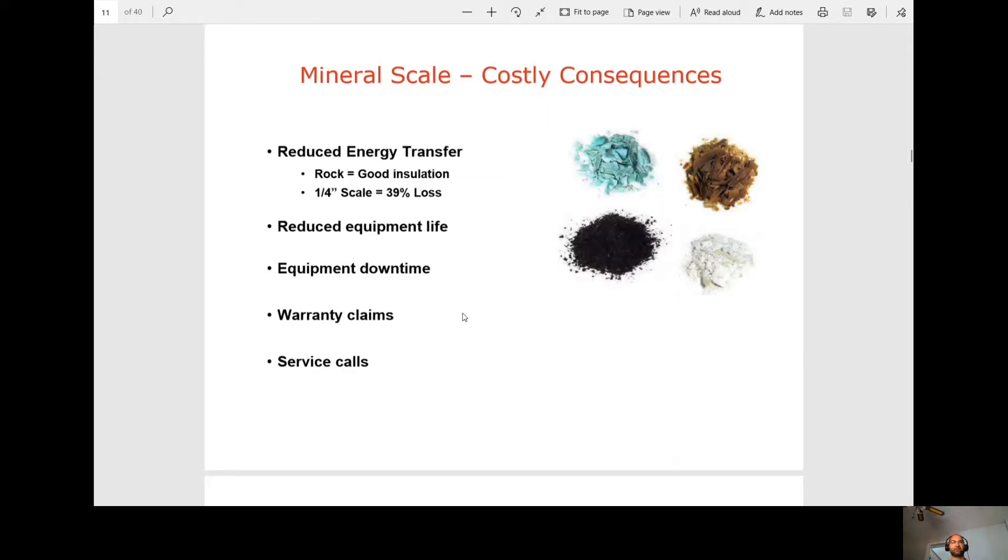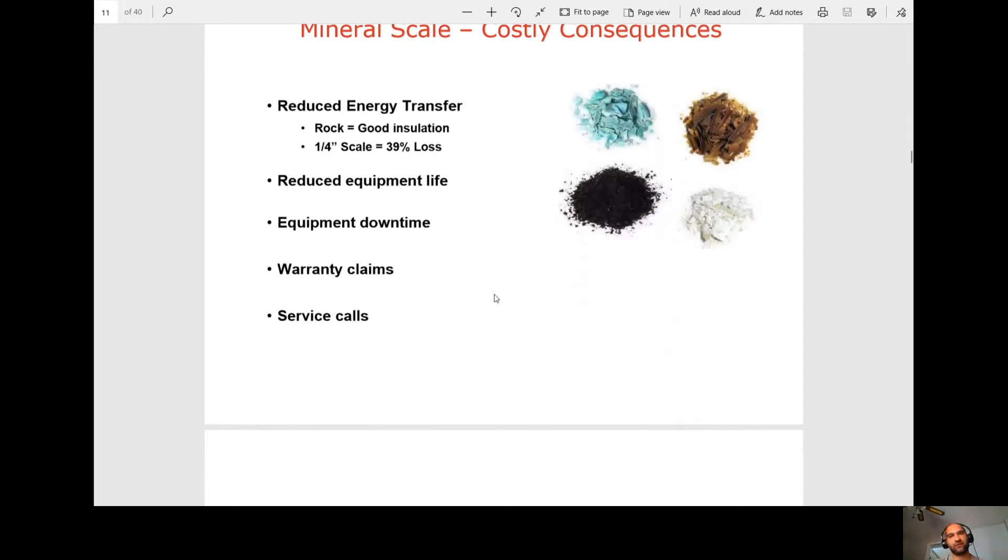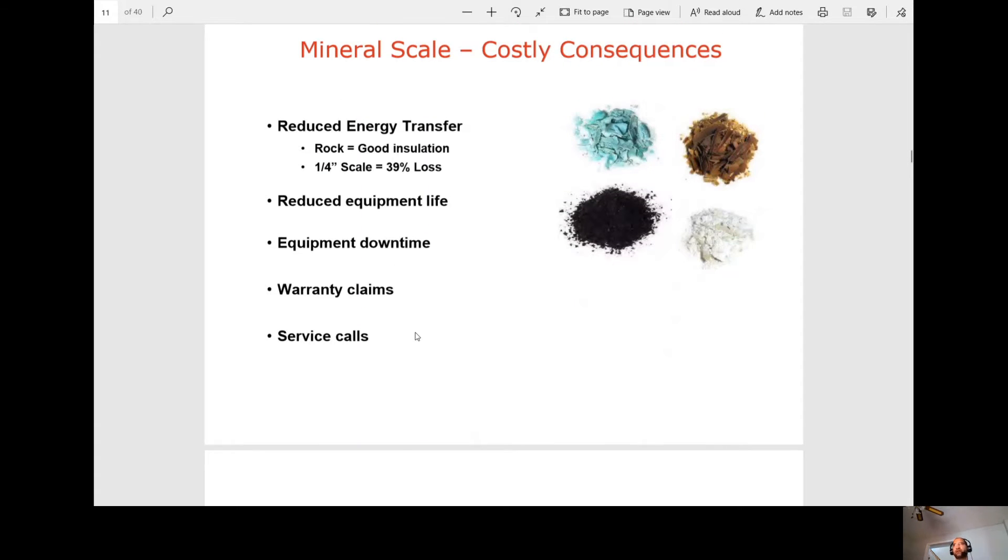So it reduces energy transfer. Rock, so that's like the harder types that we obviously see a lot of here, it acts as an insulator. As we saw earlier, a quarter inch of scale equals 39% loss. It reduces the equipment life. Obviously, the scale is eating away at all the components at the boiler walls. And then that leads to equipment downtime and warranty claims, which if it's scaled up and they haven't been descaling it, the warranty will be voided and it leads to more service calls. So that's why it's important that the customer has a good filtration system and that the boiler is being cleaned out regularly.